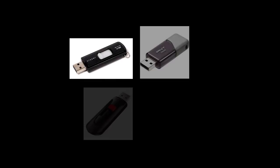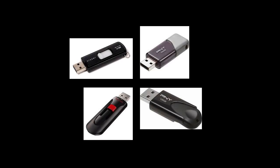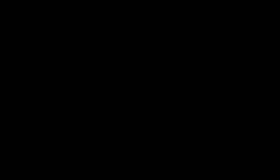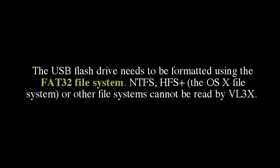The first thing you'll need is a USB flash drive, memory stick, or thumb drive. The important thing is the supported file system. When you format your thumb drive — and I recommend everyone start by formatting the drive — make sure you format it using the FAT32 file system. That's the typical PC/Windows filing system. Things like NTFS, HFS Plus (the macOS file system), or other file systems cannot be read by the VL3X, so it's very important you use FAT32.